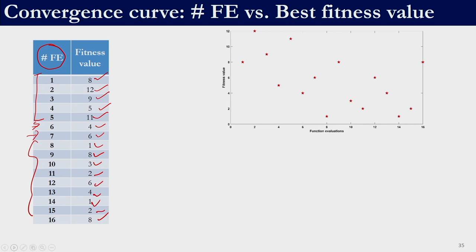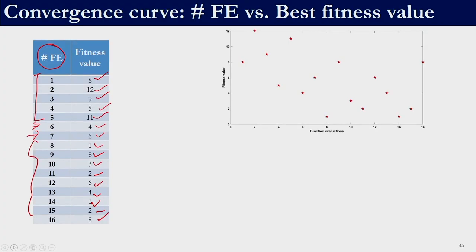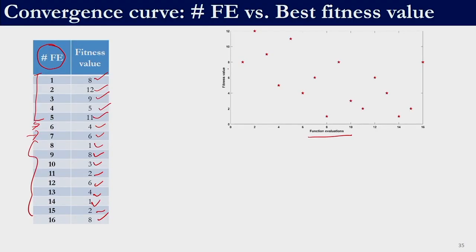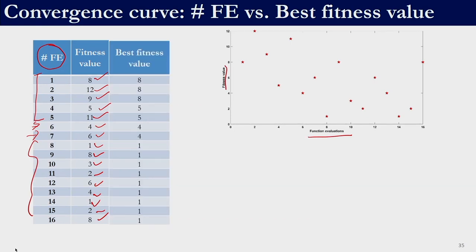If we keep doing iterations, it is going to exhibit a downward trend overall, but the inference is not that clear because you are plotting every functional evaluation. For example, let us say you have generated a solution which is actually inferior. Since you evaluate the fitness function of that particular solution you will also end up plotting it when plotting between functional evaluation and fitness value.